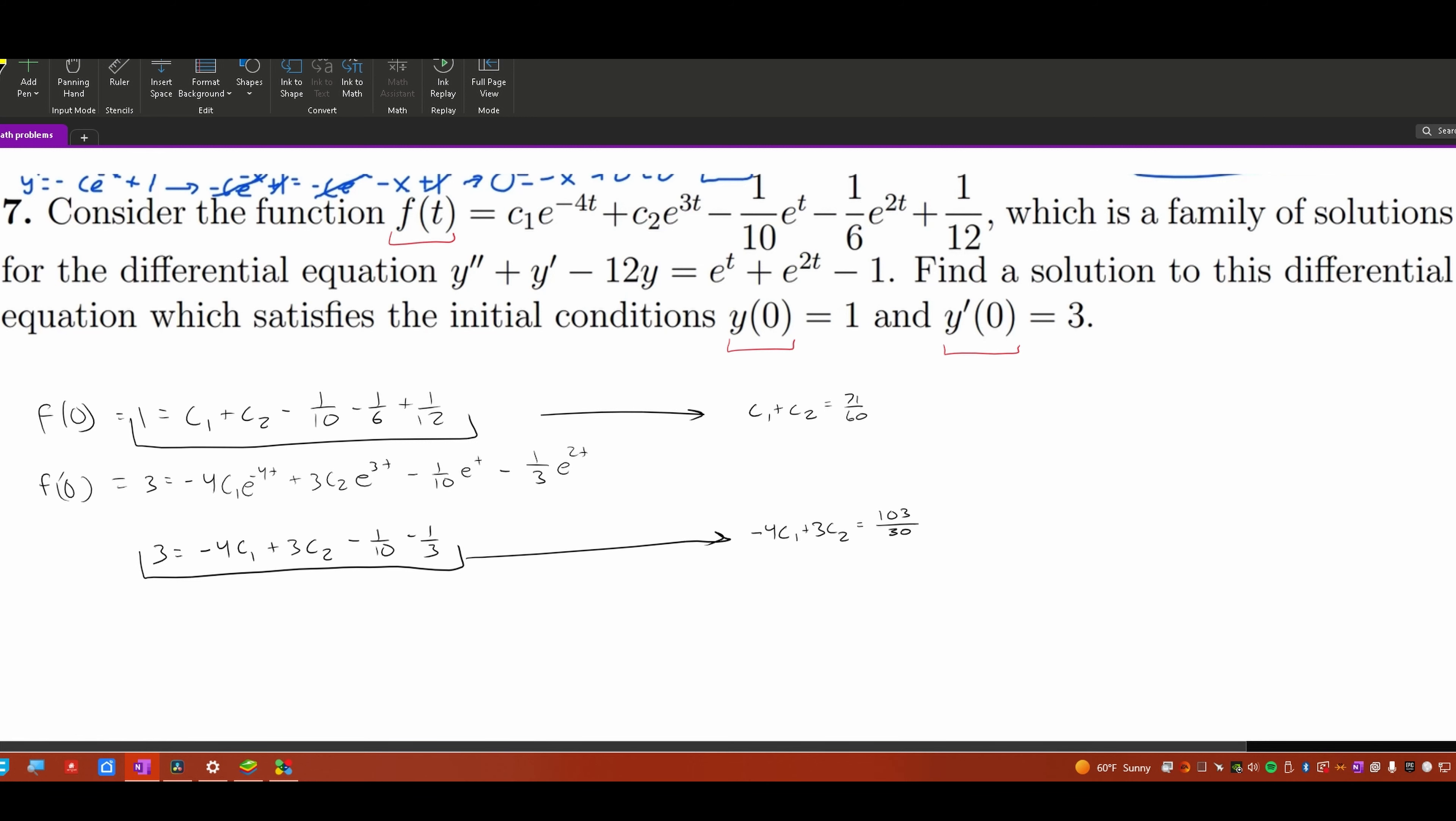And if we simplify it, we're going to get something like the following. Now we just want to solve for c1 and c2, so I'm going to multiply this by 4, and you know what to do from here. And that's going to give us a c2 of 7 over 6. Now let's take this and plug it back into here. Now that's going to give us a c1 of 1 over 60.